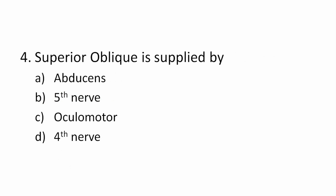Question 4: Superior oblique is supplied by which nerve? Options: abducens (6th), 5th nerve, oculomotor (3rd), or 4th nerve. The correct answer is the 4th nerve — SO4. The mnemonic is SO4 (superior oblique → 4th nerve), LR6 (lateral rectus → 6th nerve), and all others are supplied by the oculomotor (3rd nerve).